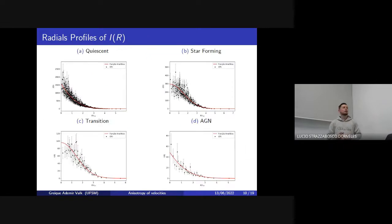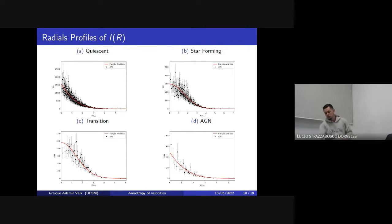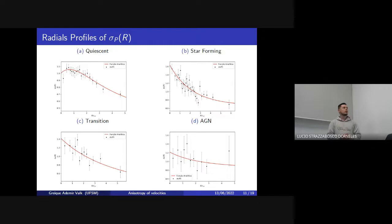Here is the projected number density profile for the four populations. We can see that for the quiescent population, the density profile has higher values in the central region, unlike the star-forming and transition populations. Here is the profile of projected velocity dispersion for the four populations. We can see that the star-forming, transition, and AGN populations have higher values of sigma in almost all radial areas.